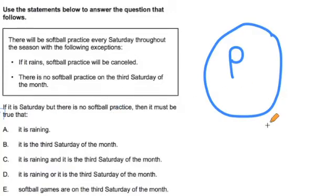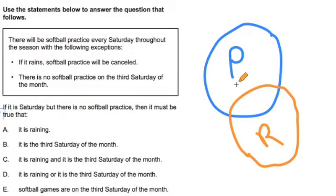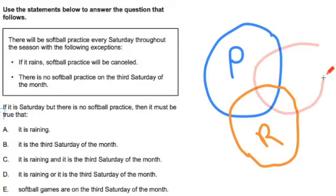However, sometimes it rains. So a chunk of those days — rain is going to affect a chunk of those practices. During this overlap, when you would have had practice and it rains, you're not going to have practice. And on some of those days it's the third Saturday of the month, and we all know that on the third Saturday of the month there's no practice. So there's going to be some overlap there with the third Saturday.